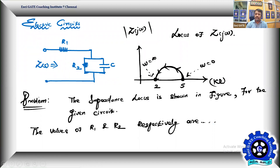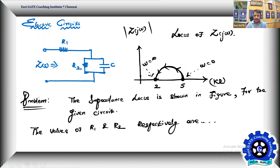In circuits we had easy problems only. Relatively comparing to GATE 21, the problems in GATE 22 are very easy — this problem is also proving that point. Given we have two resistors and one capacitor, the impedance locus is given.